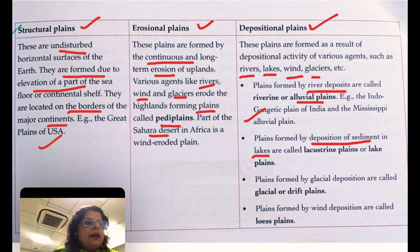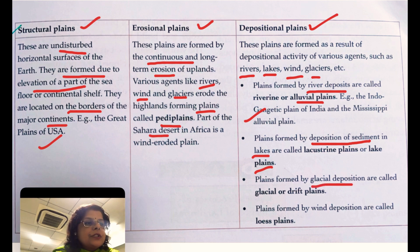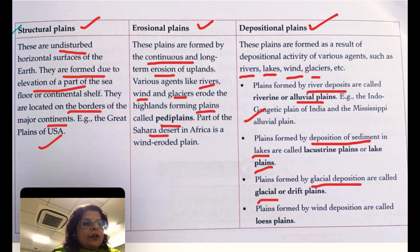Plains formed by deposition of sediments in lakes are called lake plains. Plains formed by glacial deposition are known as glacial plains, and wind-deposited plains are known as loess plains.